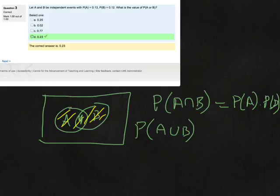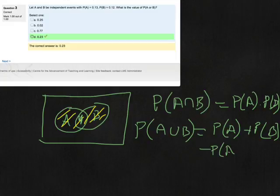It's going to be equal to the probability of A plus the probability of B. That'll give you the whole area but we've also got some overlap and we know that the overlap by the independence is the probability of A multiplied by the probability of B.